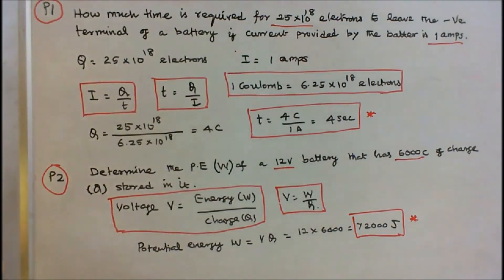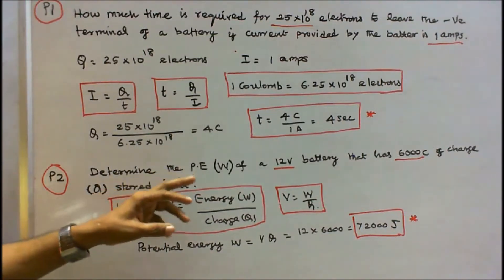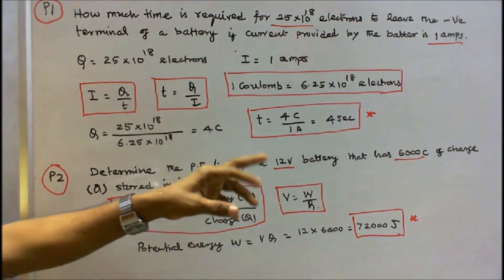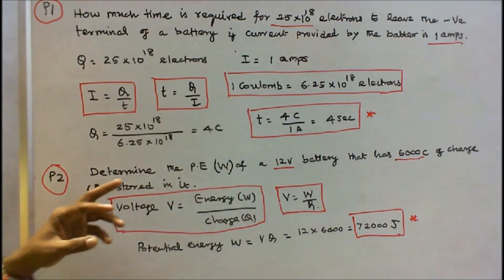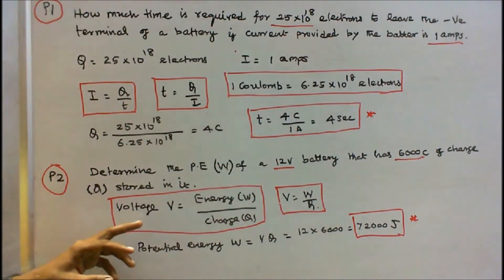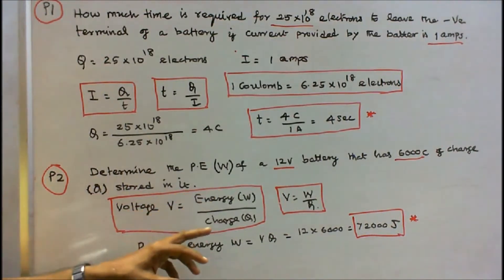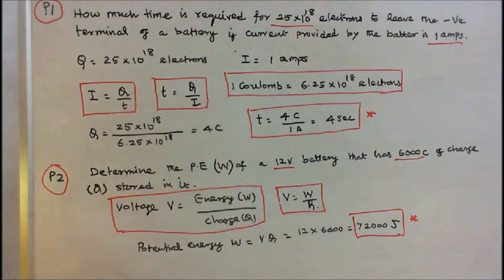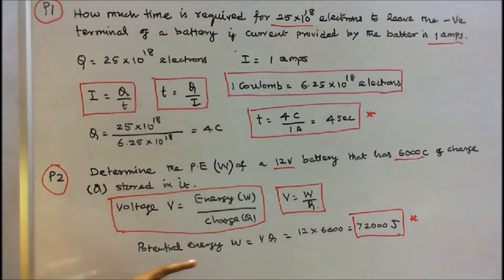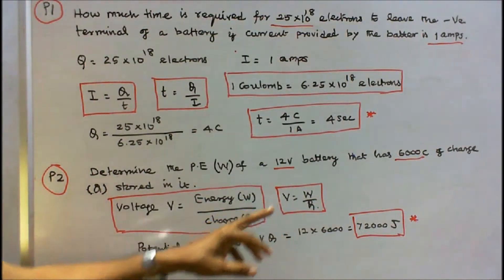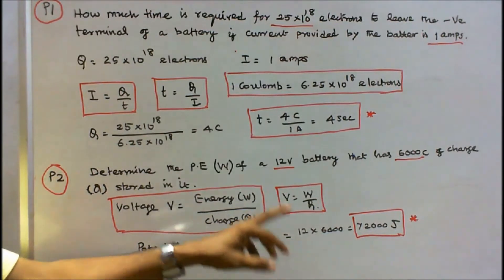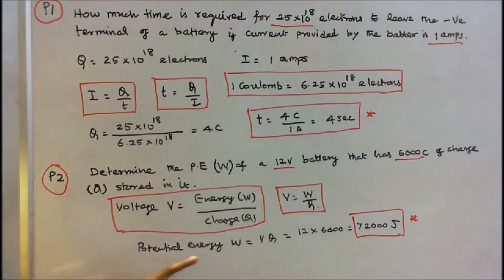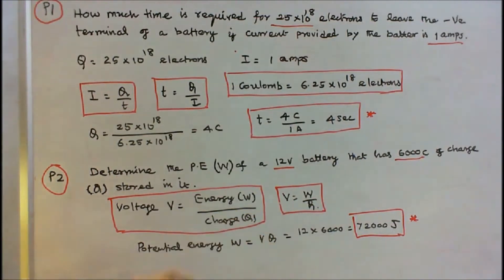Problem 2: Determine the potential energy W of a 12-volt battery that has 6000 coulombs of charge stored in it. We know that voltage V = W/q, so potential energy W = V × q. With V = 12 volts and q = 6000 coulombs, W = 72,000 joules.